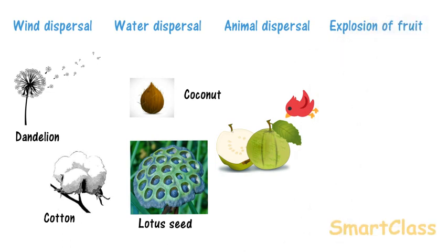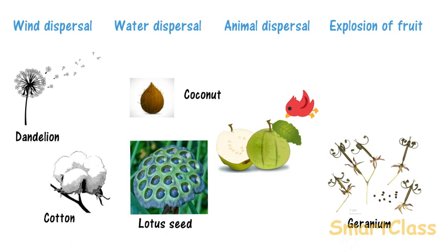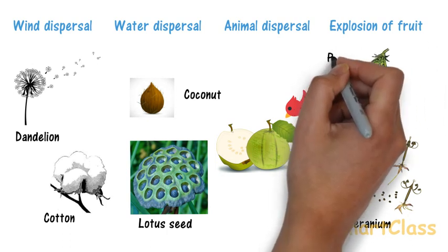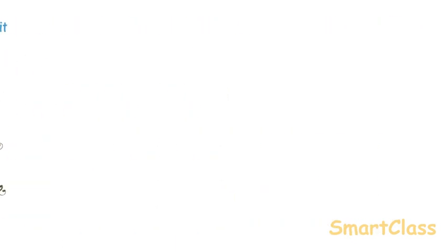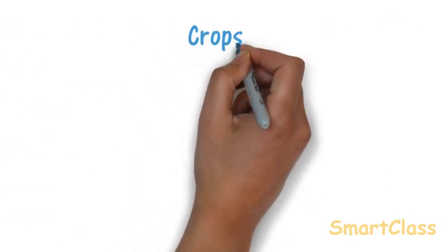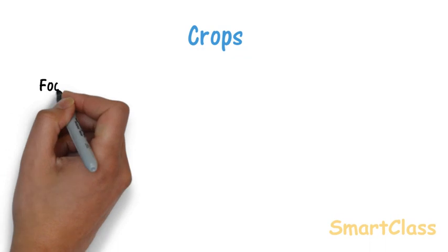Explosion of fruit: Fruits of plants like geranium, peanut and touch me not burst open or explode and disperse the seeds.